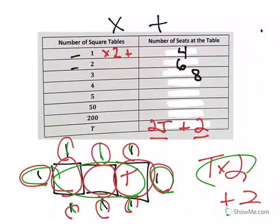So let's check that. One times two, plus two, one times two is two, plus two is four. Two times two is four, plus two is six. Three times two is six, plus two is eight. Four times two is eight, plus two is ten. Five times two is ten, plus two is twelve. And keep going down the line, right? Fifty times two is one hundred, plus two is one hundred two. Two hundred times two is four hundred, plus two would be four hundred two.